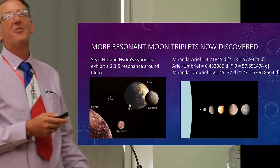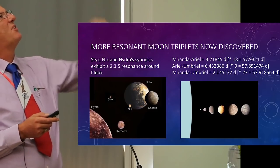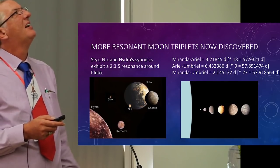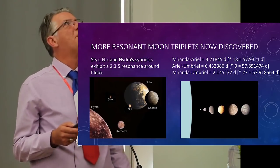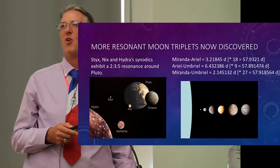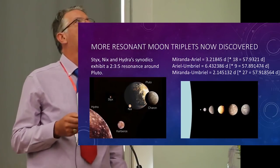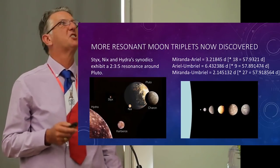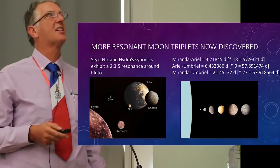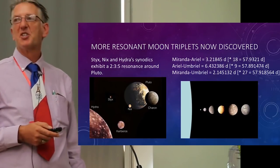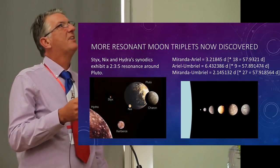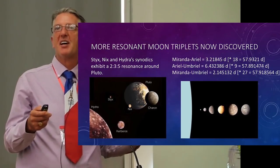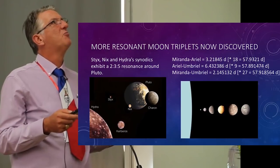And then we made the discovery that moons of Uranus, Miranda, Ariel and Umbriel, also exhibit a three to two to one and that had never been spotted before because it's not obvious from just looking at the orbital periods that there's a relationship there. It's only once you do the calculation to get the conjunction periods that the three to two to one becomes obvious. So in fact this is ubiquitous and we can start to look more carefully at resonance in the solar system.